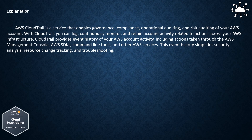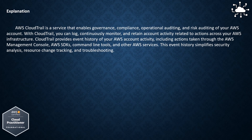and risk auditing of your AWS account. With CloudTrail, you can log, continuously monitor, and retain account activity related to actions across your AWS infrastructure. CloudTrail provides the event history of your AWS account activity, including actions taken through the AWS Management Console, AWS SDKs, command line tools, and other AWS services. This event history simplifies security analysis, resource change tracking, and troubleshooting.